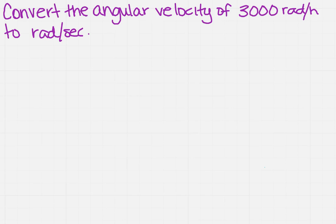We want to convert the angular velocity of 3,000 radians per hour to radians per second. So how are we going to do that? Well, we always want to start out with a given.